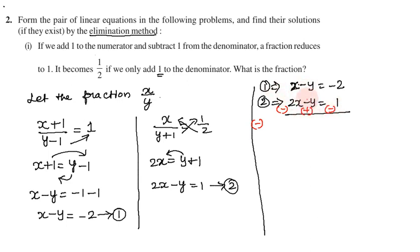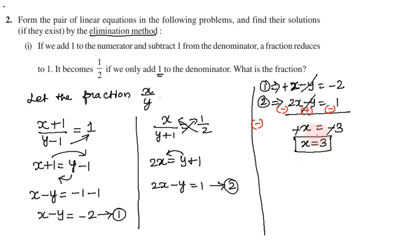Same sign means subtract. Subtracting the equations: minus y minus minus y cancels. 2x minus x gives x. On the right side: 1 minus minus 2 gives minus 2 minus 1, which is minus 3. So x equals 3.